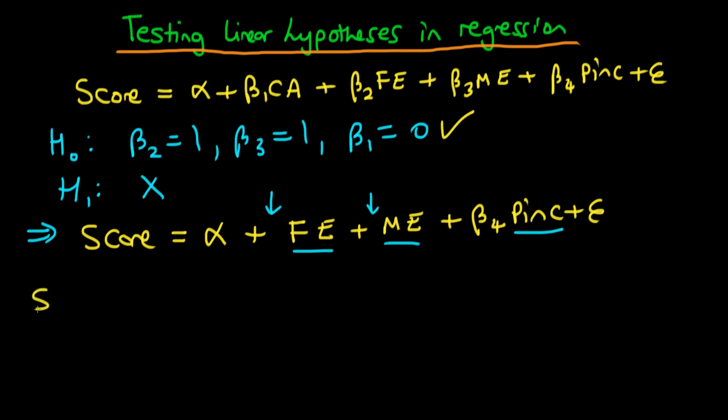Well the answer is what we do is we actually take these two variables over to the left hand side. So we would take away from score father's education as well as mother's education and then we'd have a model which is with this as our dependent variable regressed on a constant plus the parental income.